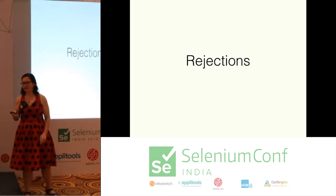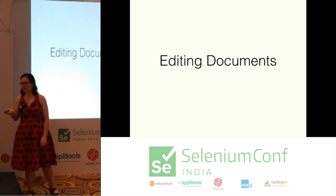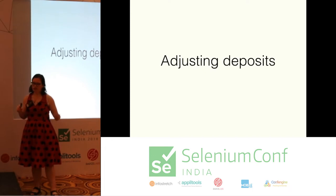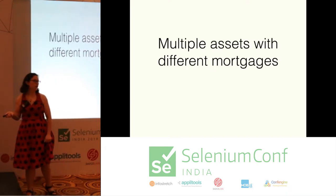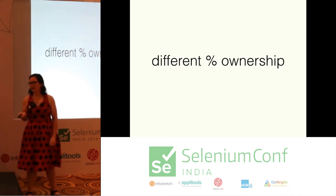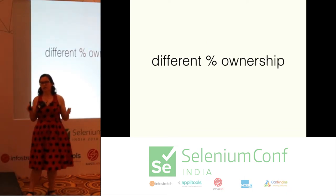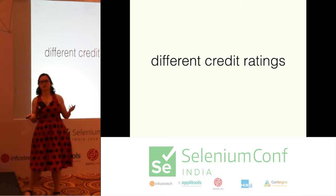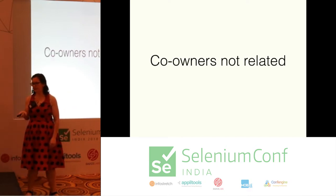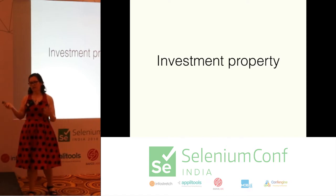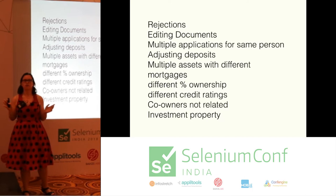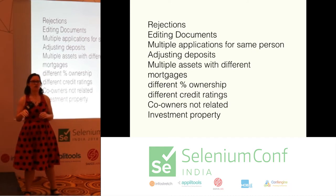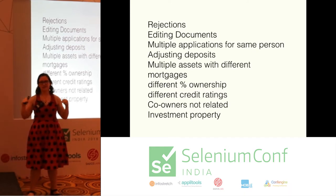What did we just test? We tested rejections — Homer was originally rejected with his first application. He had to re-edit his documents because he mis-signed his name. We had multiple applications for the same person. We had to adjust his deposit after the application had gone through. Multiple assets with different mortgage amounts and different percentage ownership. We also had two owners of the property not located at the same address, with different credit ratings feeding into different algorithms in their application process. The co-owners weren't related and were signing up for an investment property. Imagine how many bugs we would have found going through that process versus creating random standard test case walkthroughs.